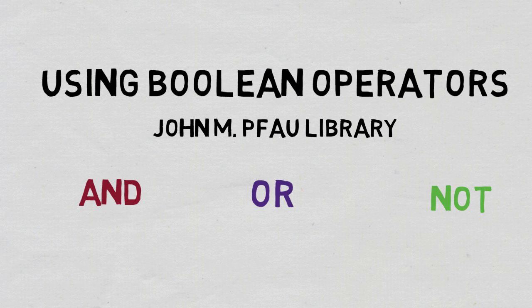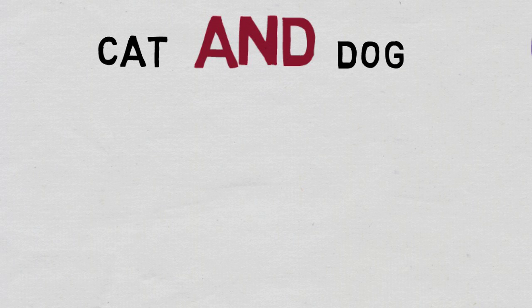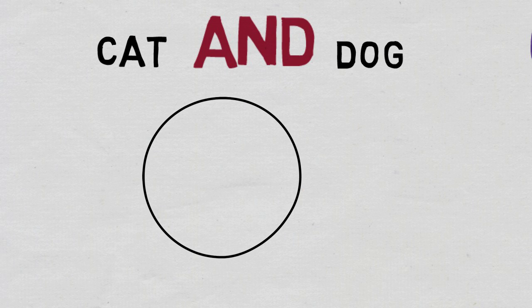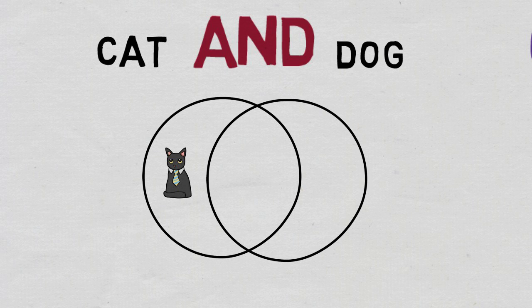Using these operators can help narrow or broaden your searches in the library's databases. An easy way to narrow your search is to use the word AND between two or more keywords. Though AND is the default for most databases and you typically will not have to type it out, it's useful to know how it works. AND retrieves only those results that contain all of your keywords.